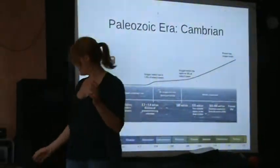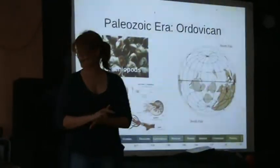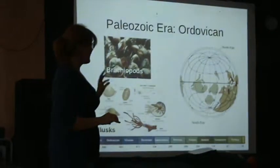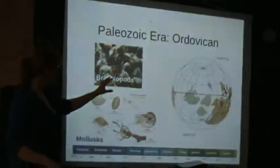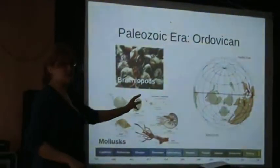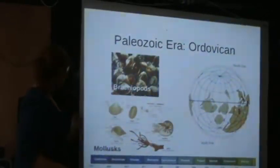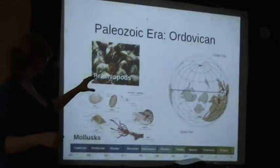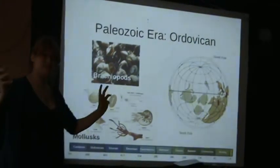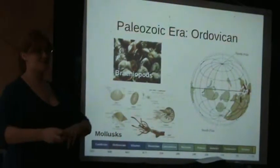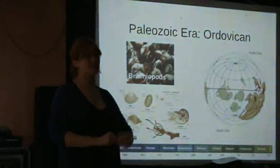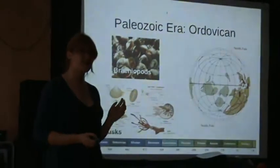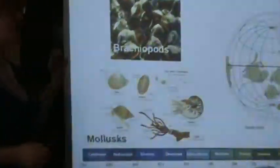Following up from the Cambrian period, you've got your Ordovician period. During this time, the tectonic plates were in a very different place to what they are now. You can see a picture of the Earth, and the orange area is a continent known as Gondwana. During this period, we had another huge diversification of life in the oceans, especially within specific filter-feeding phyla such as mollusks and brachiopods.